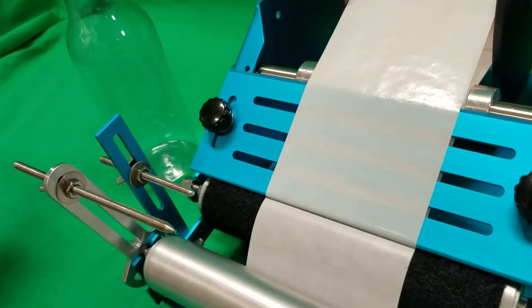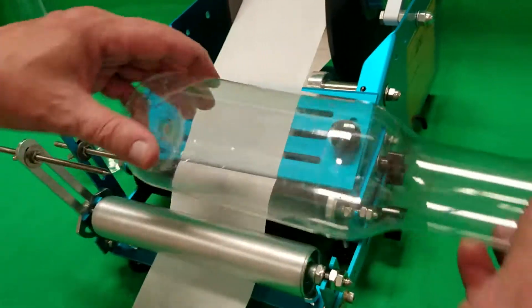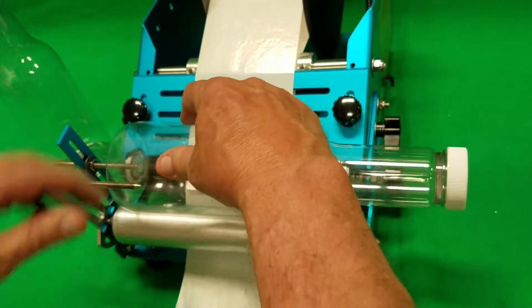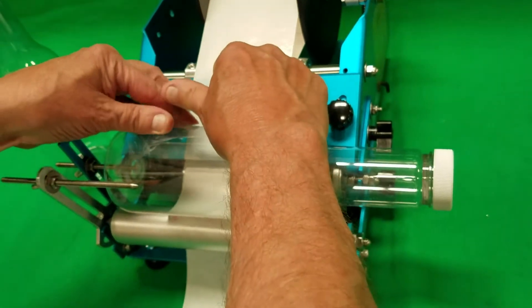So what happens is you put the bottle into the machine and you apply the front label.